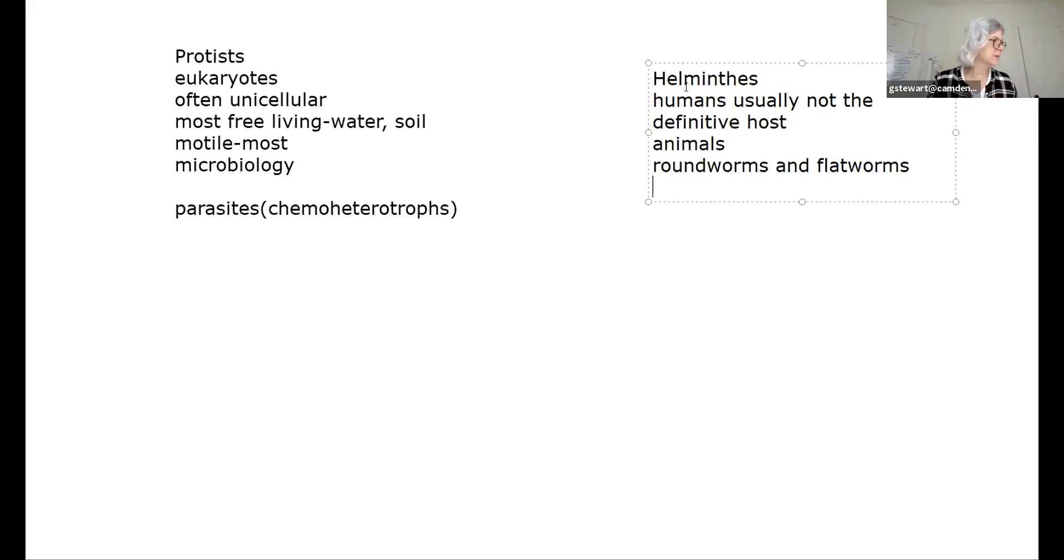The incidence of intestinal worms, helminth infections, is really high worldwide. It has to do with clean water and your sewage being far enough away from your water, because oftentimes they're spread from the feces of an animal or the feces of one person to another person.